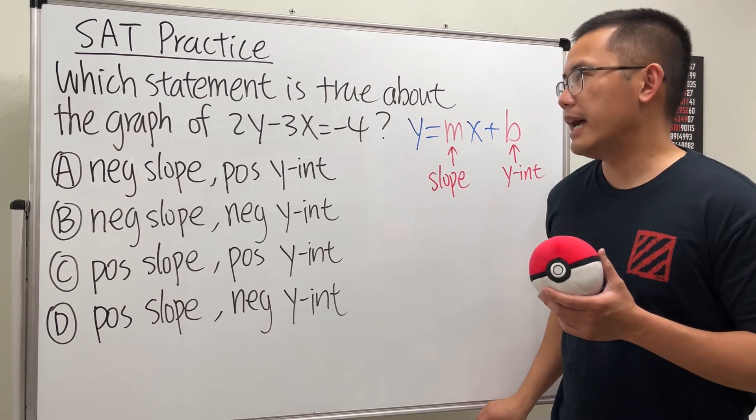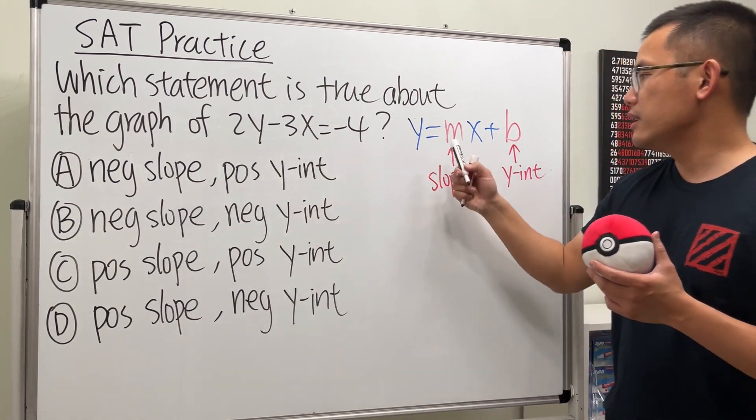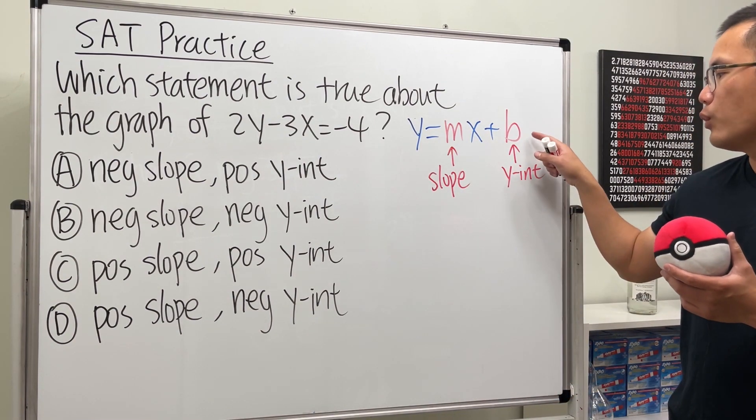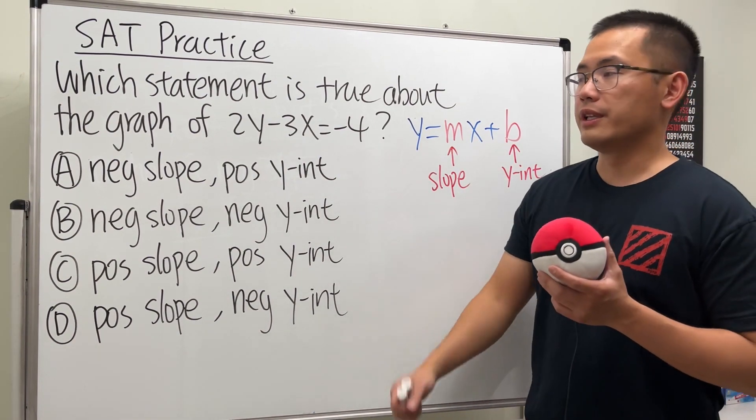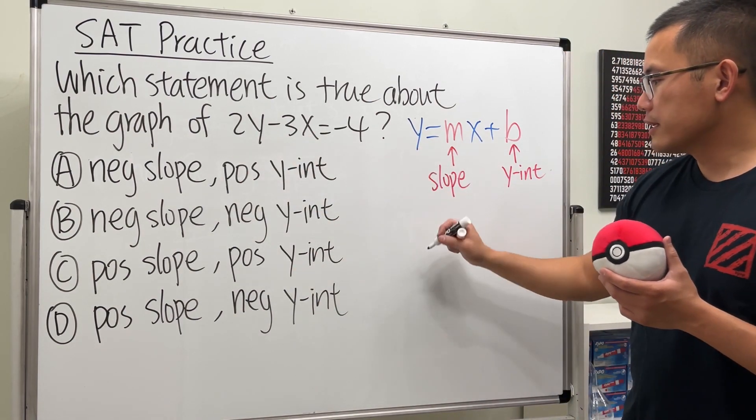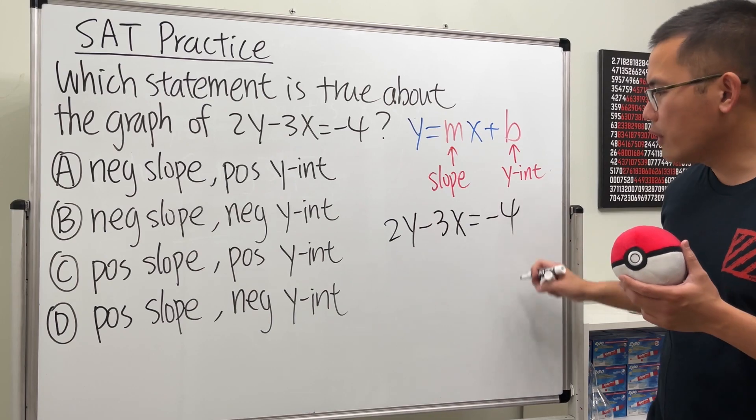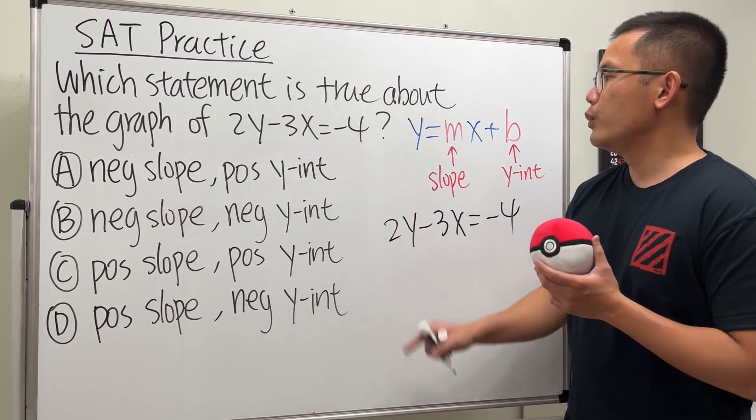So if we can write this equation in this form, then we'll be able to find out what the slope is and what the y-intercept is. Let's get to work. Let me write this down again: 2y - 3x = -4. The key is we have to get y by itself.